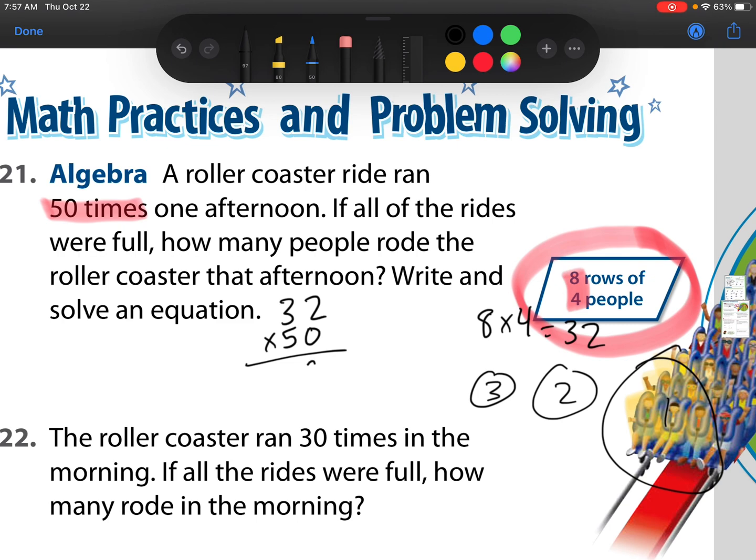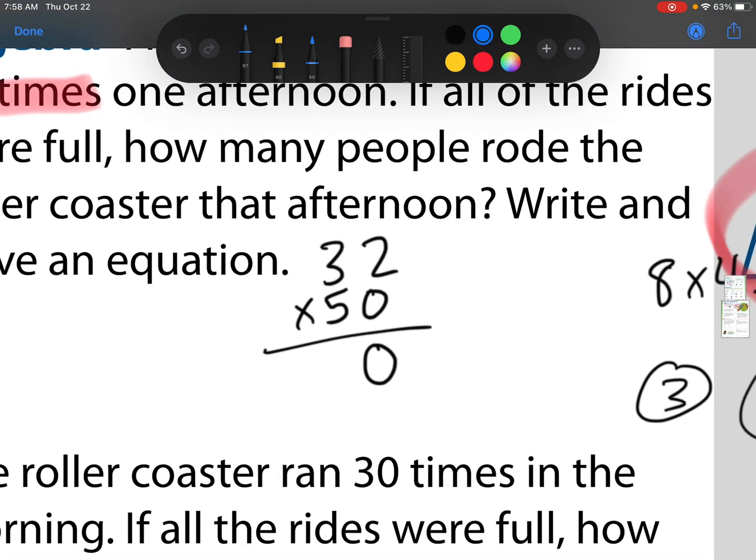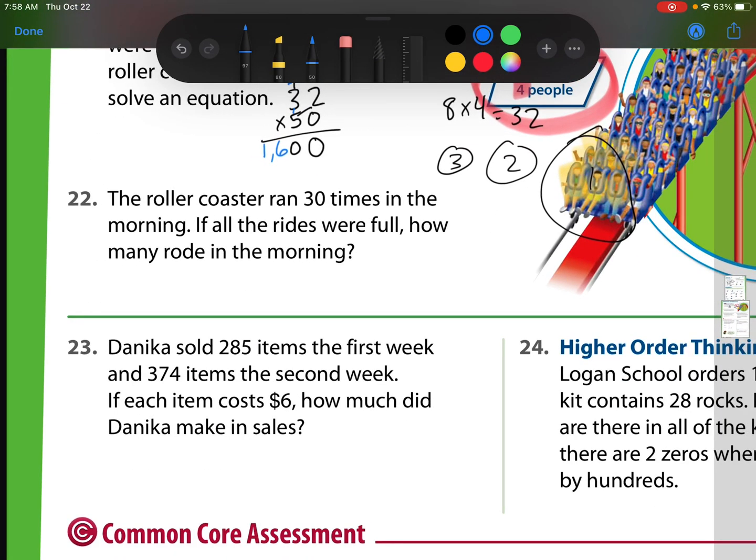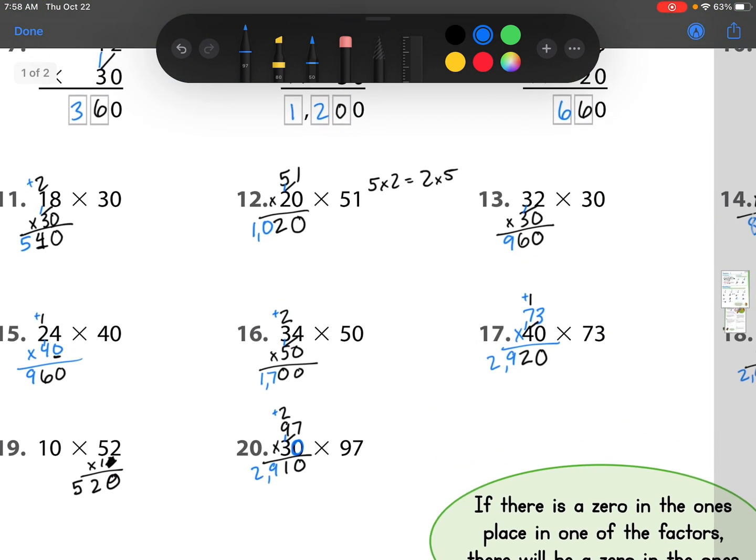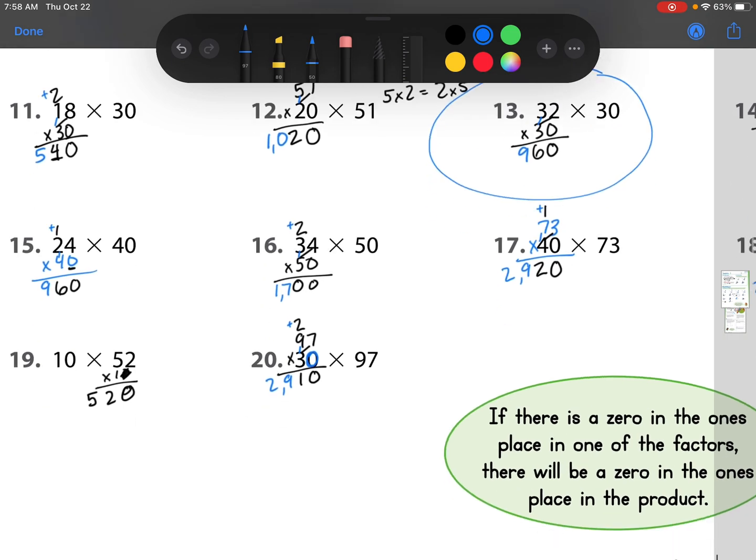So just like we did before, I have a 0 in the ones place value, so I'm going to put a 0 down. And then I can multiply. We have 5 times 2 is 10, so I regroup that 1. Then we have 5 times 3 is 15, plus 1 is 16. 1,600. Number 22 now. It says the roller coaster ran 30 times in the morning. If all the rides were full, how many rode in the morning? Well, here we have 30 times 32. And you want to know something? I can solve it, or I can go back and look and say, hey, that was one of the problems I did right before. So I have that answer right up there.